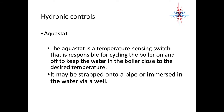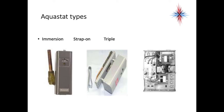The next component is the Aquastat. The Aquastat is a temperature-sensing switch responsible for cycling the boiler on and off to keep the water close to the desired temperature. It can be strapped onto a pipe or immersed in the water via a well or access point on the boiler. There are several types: an immersion type that screws into the boiler, a strap-on type that clamps onto a pipe, and a triple Aquastat, which is by far the most frequently found due to its functionality.